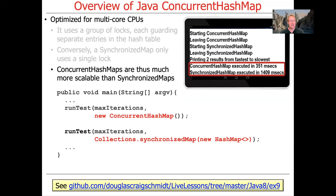As a consequence, ConcurrentHashMaps are much more scalable than synchronized maps. If you look at the EX9 example in the Java 8 folder of the live lessons repository on GitHub and run it, you'll see that ConcurrentHashMap is much more efficient than synchronized HashMap when determining whether N numbers are prime. The test is written so that you just change the map passed into the benchmarking method, keeping everything else the same, but using a different synchronizer under the hood.